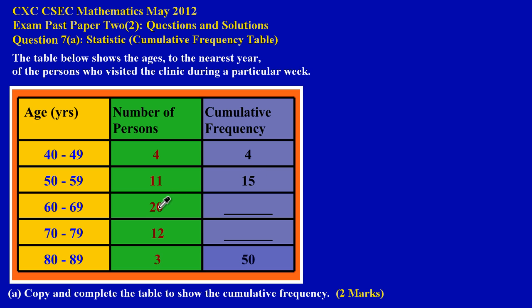So what I'm going to do is add this 20 to the 15. When I add 20 to 15 I get 35, so I'll put 35 in the next cumulative frequency cell.